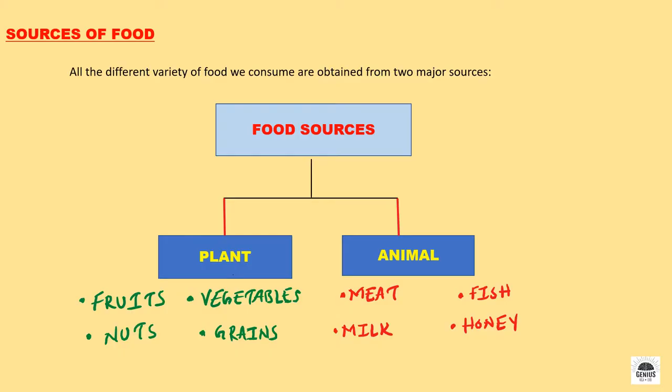Now, sources of food. All the different varieties of food we consume are obtained from two major sources: plants and animals. We get fruits, vegetables, nuts, grains, pulses, etc. from plants, and we get meat, fish, milk, honey, etc. from animals.